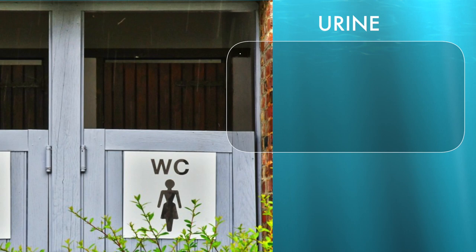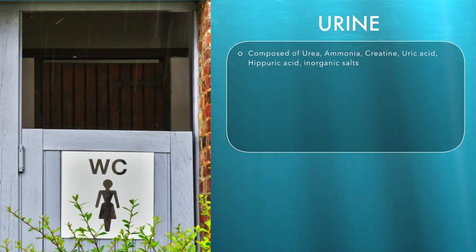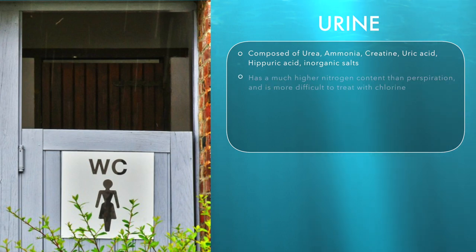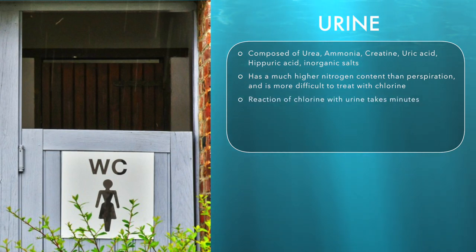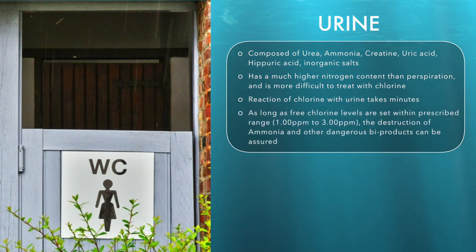Urine is composed of urea, ammonia, creatine, uric acid, hypoic acid and inorganic salts. Urine has a much higher nitrogen content than perspiration and is therefore more difficult to treat with chlorine. However, the reaction of chlorine with urine takes only minutes and as long as the free chlorine levels are set within the prescribed range — one parts per million to three parts per million — the complete destruction of ammonia and other dangerous by-products can be assured.